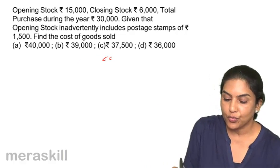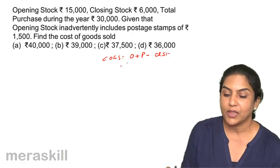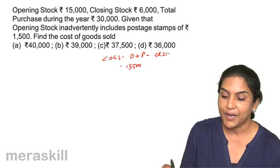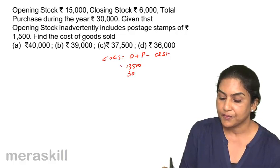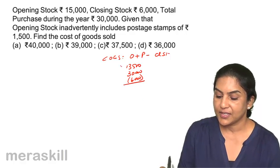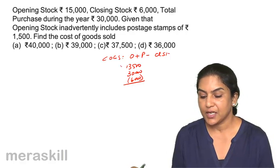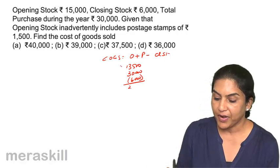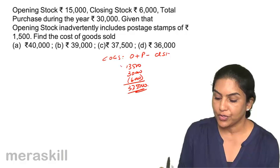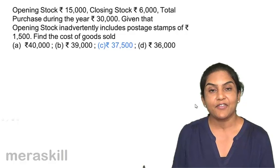Cost of goods sold equals opening stock plus purchases minus closing stock. What is your opening stock? 15,000 minus 1,500 — that's 13,500 — plus purchases of 30,000, less closing stock of 6,000. Therefore: 13,500 plus 30,000 minus 6,000 equals 37,500 should be the cost of goods sold. Correct option should be C, 37,500.